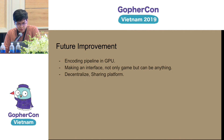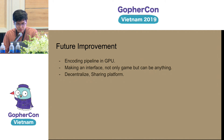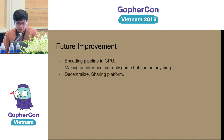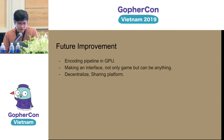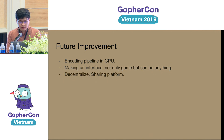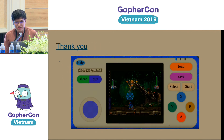For future improvements: currently the encoding pipeline runs on CPU, which is a bottleneck for the project — it prevents me from running AAA games because CPU-based video and audio compression is very slow. I also plan to make a generic interface so that not only games but any application can be hosted on the platform. Thank you very much.